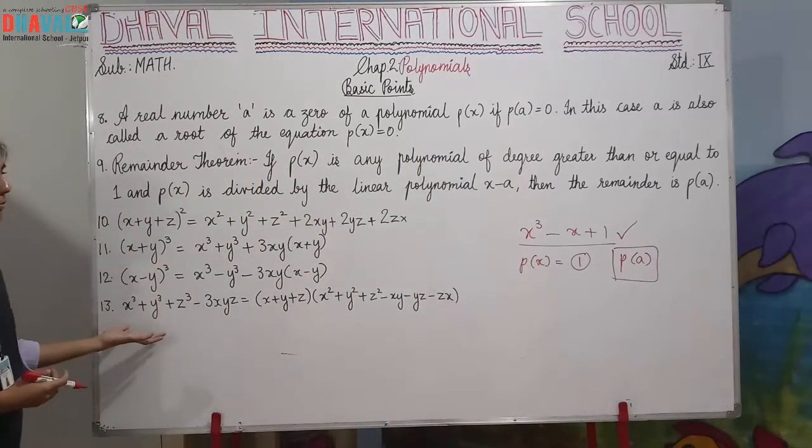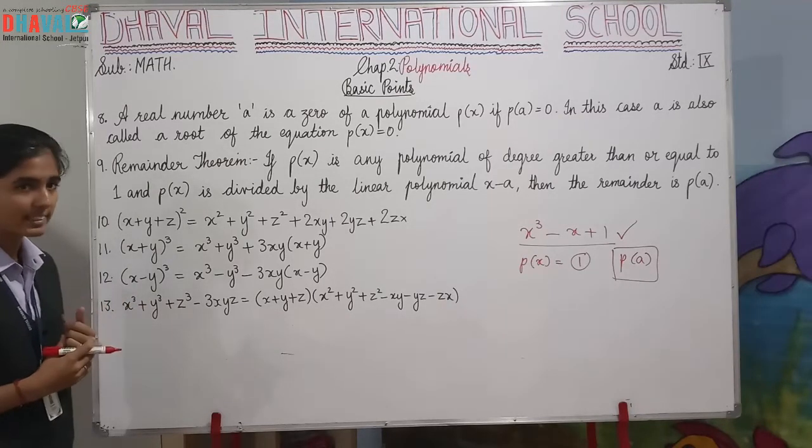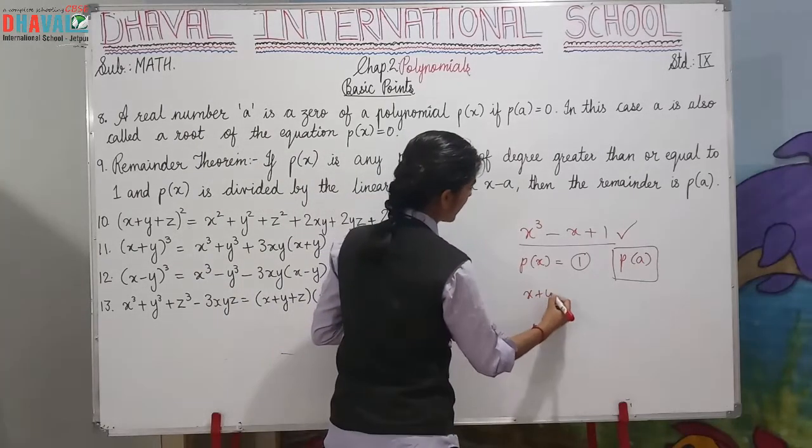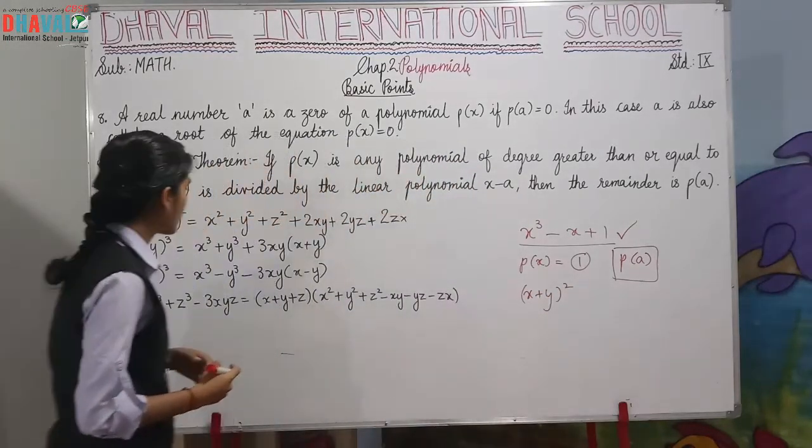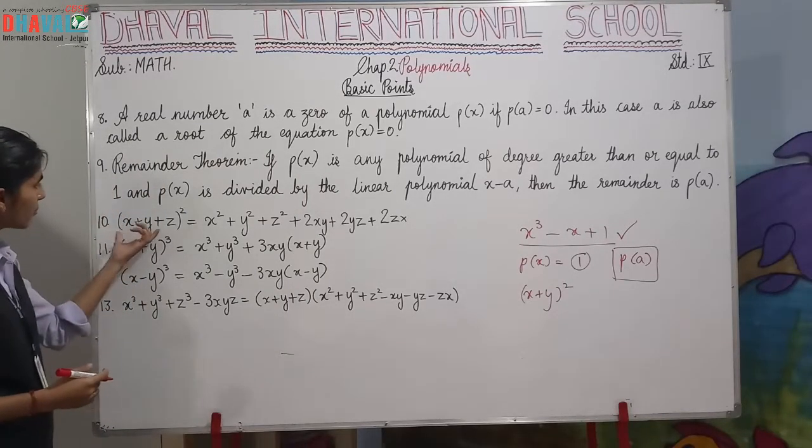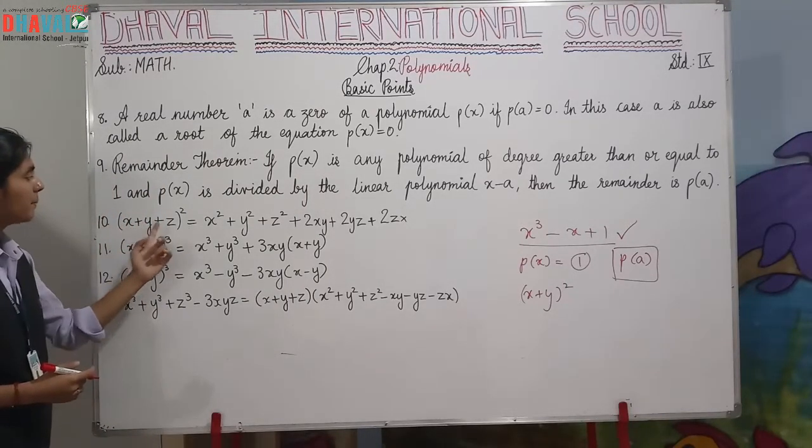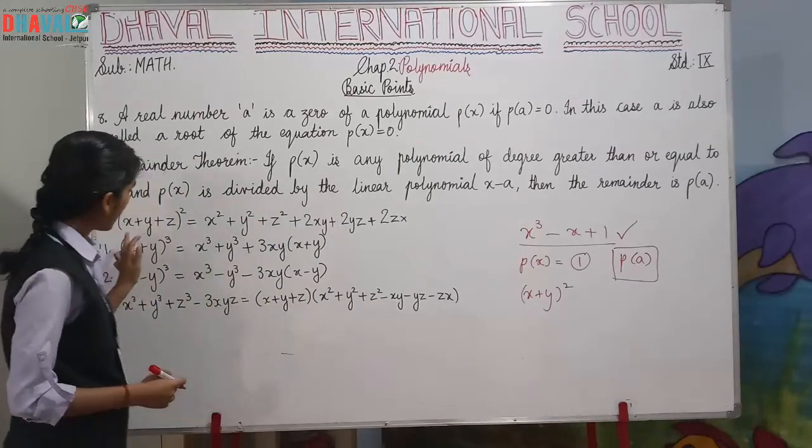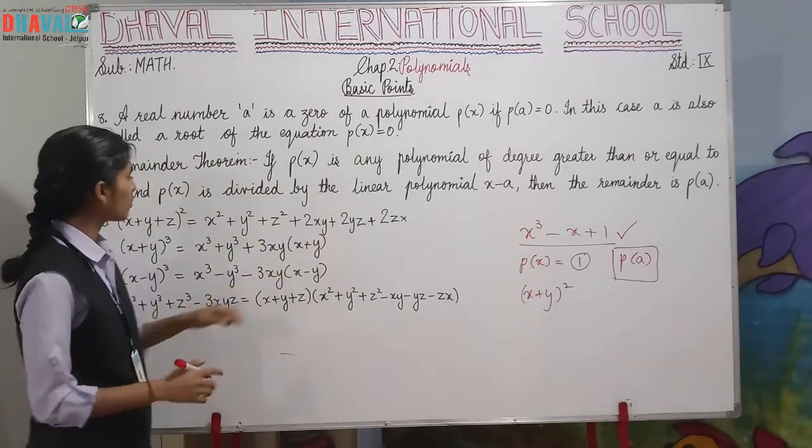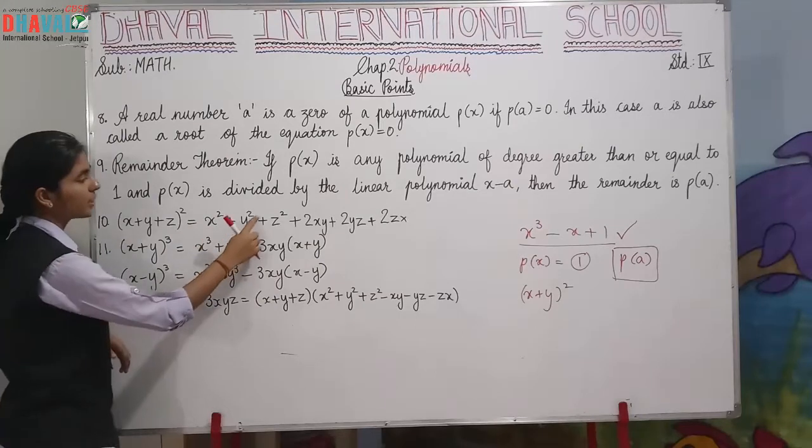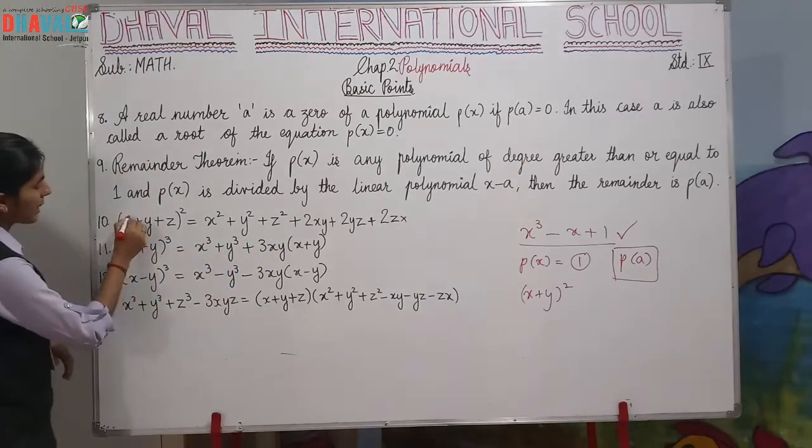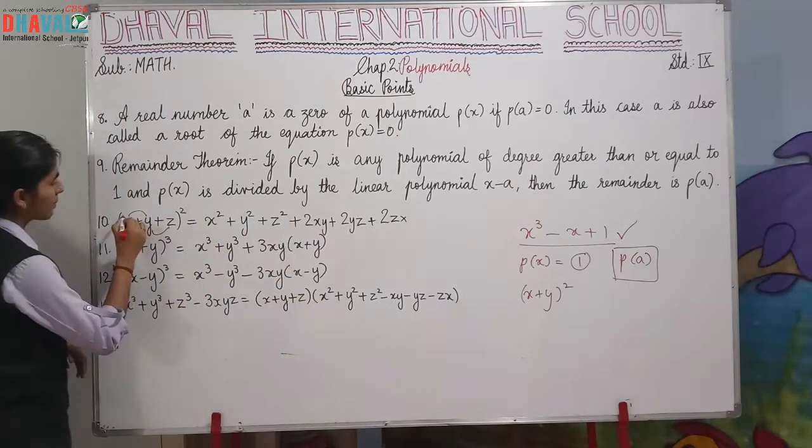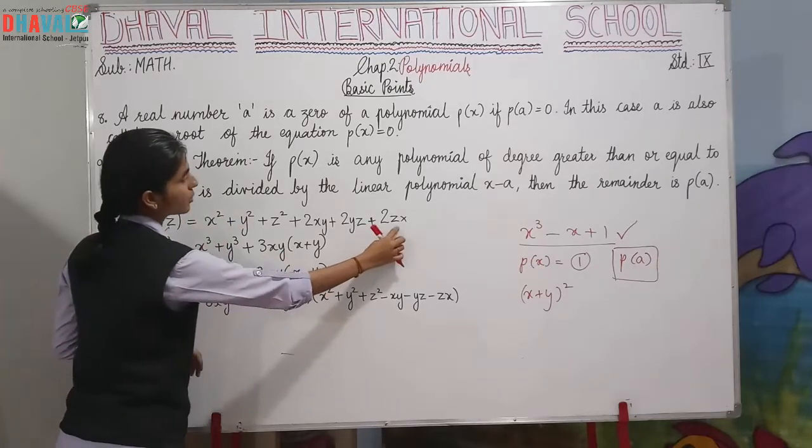Next, we have some formulas you must have studied in standard 8, like x plus y square formulas. Here the first formula is (x+y+z) whole square, which equals x square plus y square plus z square plus 2xy plus 2yz plus 2xz.